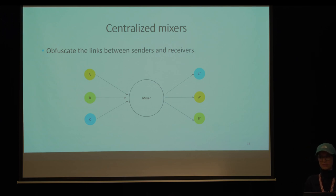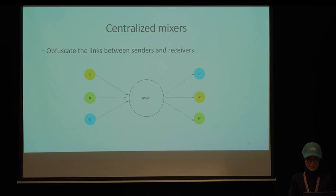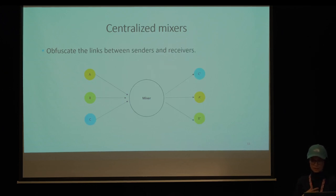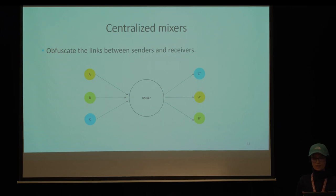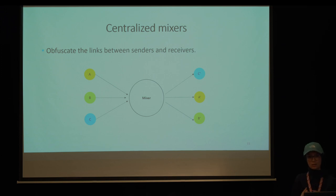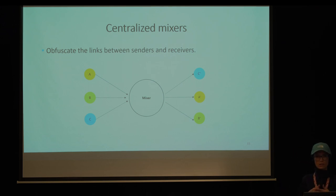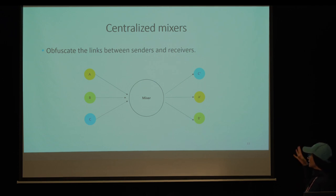The mixing idea was initially proposed by Chaum in 1981, and similar techniques have been employed to enhance privacy in the blockchain. With centralized mixers such as mixing websites, users send their coins to a mixer in equal amounts, then the mixer shuffles the recipient addresses and forwards the coins to those recipient addresses. Looking at the blockchain, one cannot distinguish to which output Alice sent her inputs.